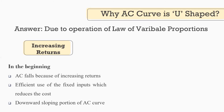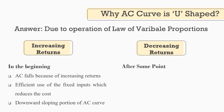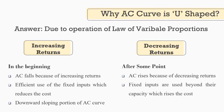After reaching some point, we have decreasing returns. So after some point, average cost rises because of this reason. In this phase, fixed inputs are used beyond their capacity, and therefore that leads to a rise in cost. So as we increase the variable input, the average cost increases, and therefore we get the upward sloping portion of the average cost curve.